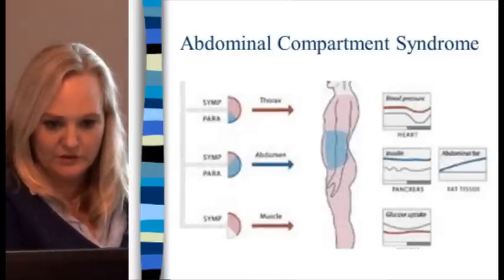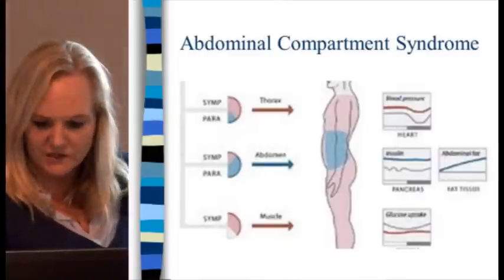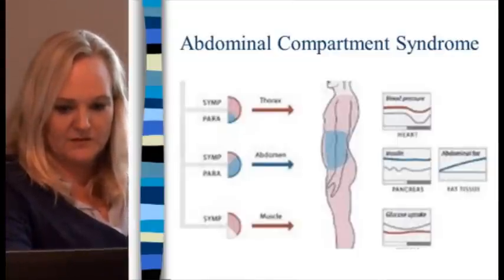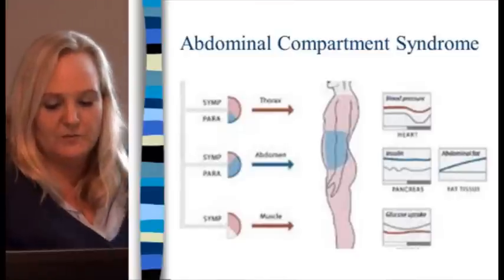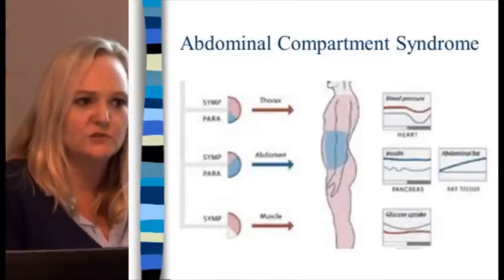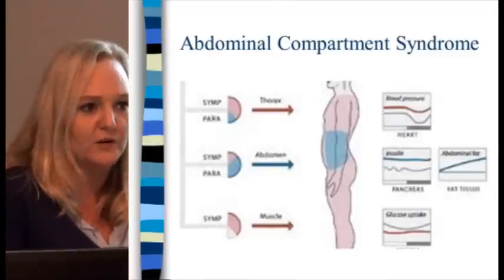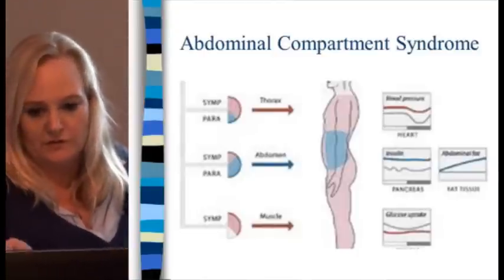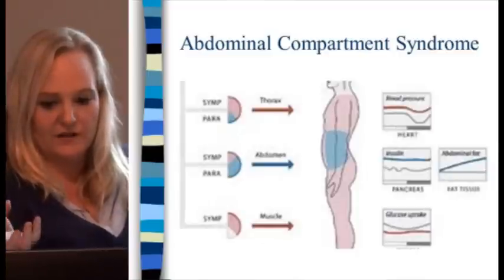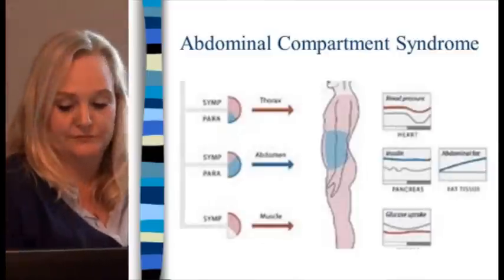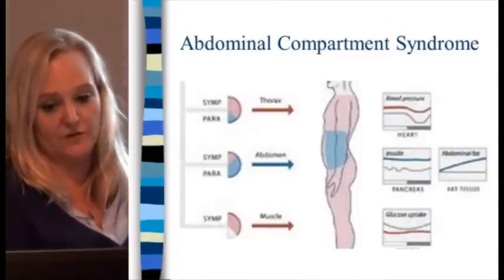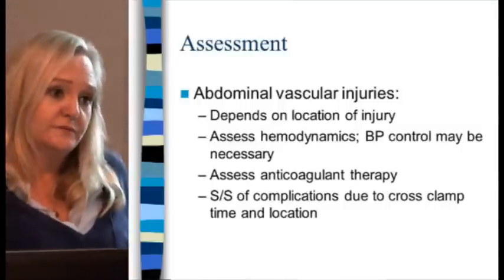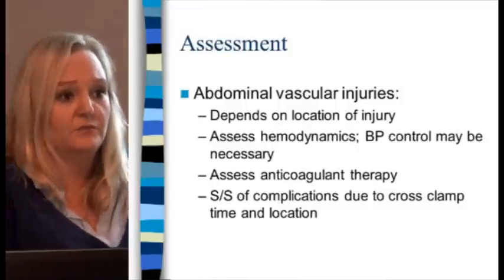Abdominal compartment syndrome can be seen in the thorax, abdomen, and thigh muscles. In the extremities, if you feel it, it's hard as a rock — not what it's supposed to be. Blood pressure will drop and these patients are usually on the ventilator. It's very difficult to manage and they often have to leave the abdomen open. We have a patient right now where the abdomen is left open for a day or two until they can go back to close.